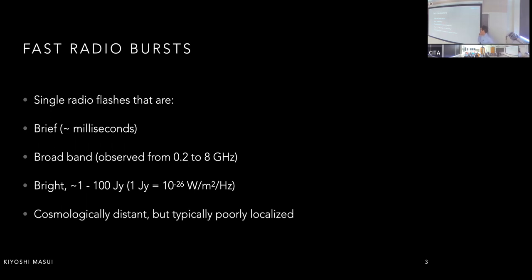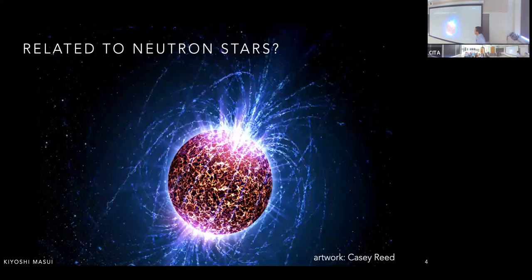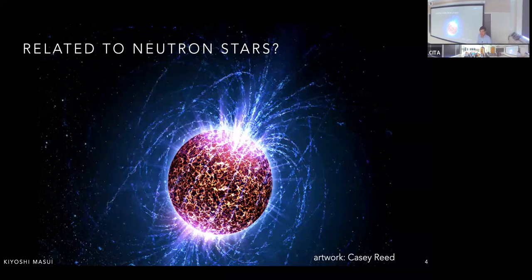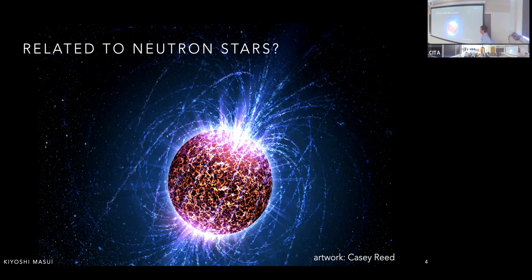These bursts are cosmologically distant but typically very poorly localized, so we don't know exactly where they're coming from. They're almost certainly related to neutron stars in some way, because the millisecond duration constrains the light-emitting region to be smaller than a light-millisecond — about 300 kilometers. Neutron stars are the only objects we can think of that small with the energy reservoir required to create such a bright radio flash.